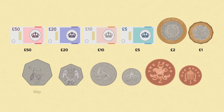This is a 50p coin. This is a 20p coin. This is a 10p coin. This is a 5p coin. This is a 2p coin. And this is a 1p coin.